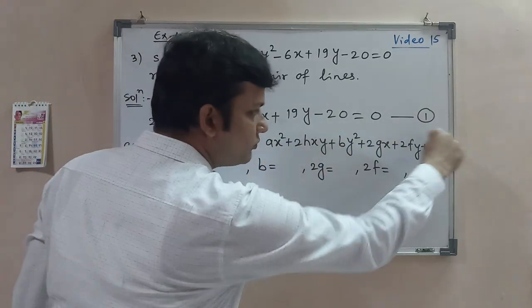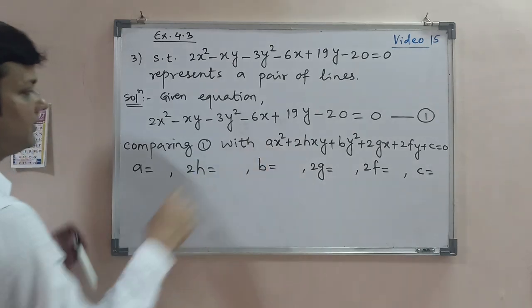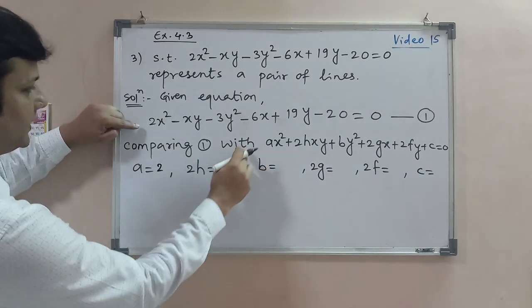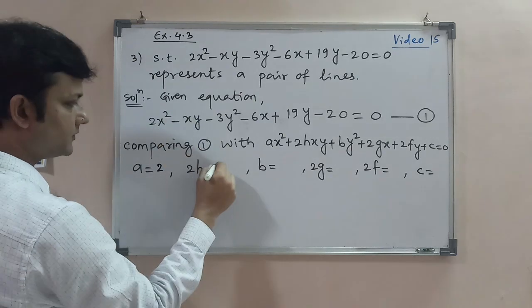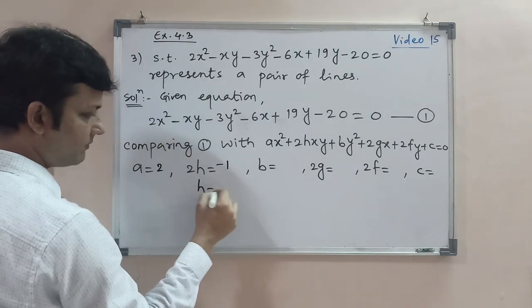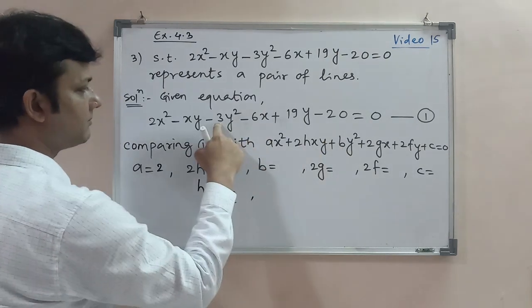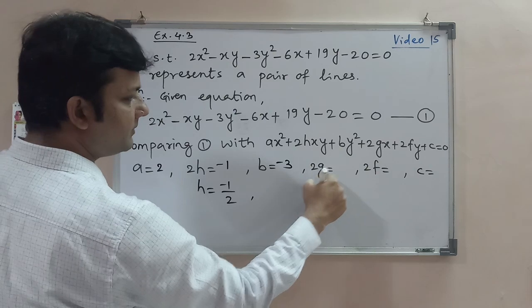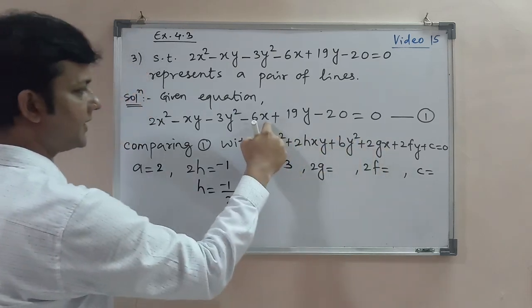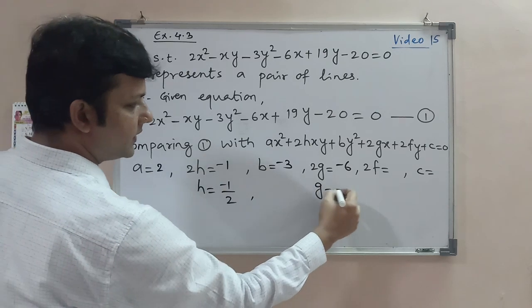Then a will be 2. 2h will be -1, so h will be -1/2. b is -3. 2g, which is x's coefficient, is -6, so g will be -3.